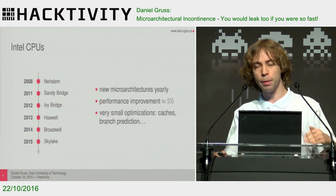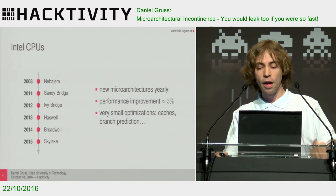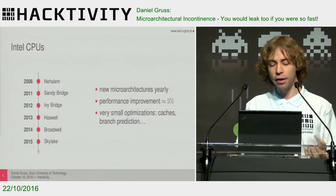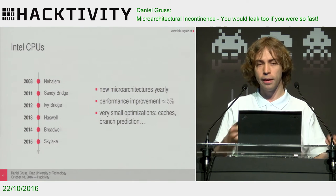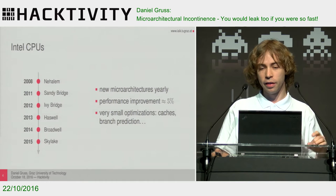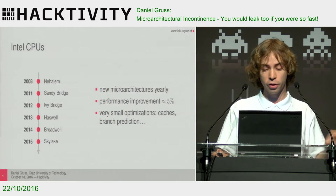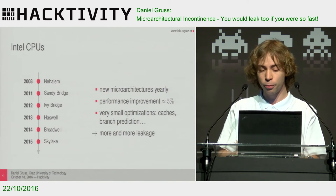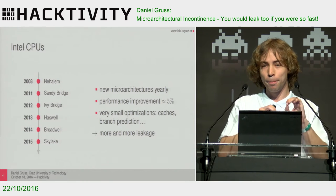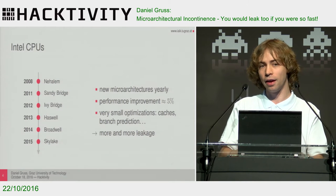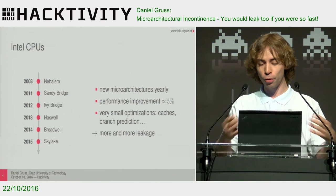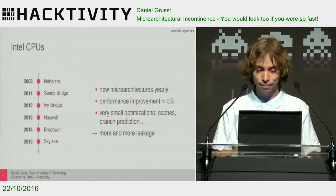If you look at microarchitectures starting from Nehalem and now ending at Skylake, we see a performance improvement from each architecture to the next of about 5%. This improvement comes from very small optimizations — mostly caches and optimizations and single instructions that can now take shortcuts. And every optimization that is dependent on data or the location of the access means more and more leakage that we can exploit.